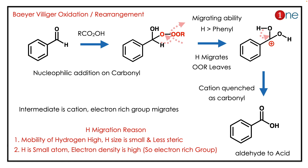Basically it's a rearrangement reaction. The first step is attack of the nucleophile — nucleophilic addition. Then one group migrates to make the leaving group ROO minus. Which group migrates? Hydrogen, because the intermediate is a cation.